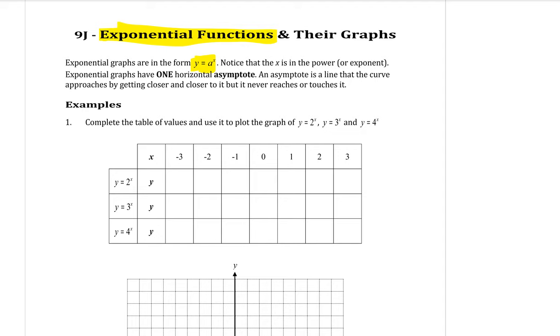Exponential graphs have one horizontal asymptote. An asymptote is a line that a curve approaches by getting closer and closer to it but never reaches or touches it, and I will show you what that means when we can actually see it on a graph in a minute.